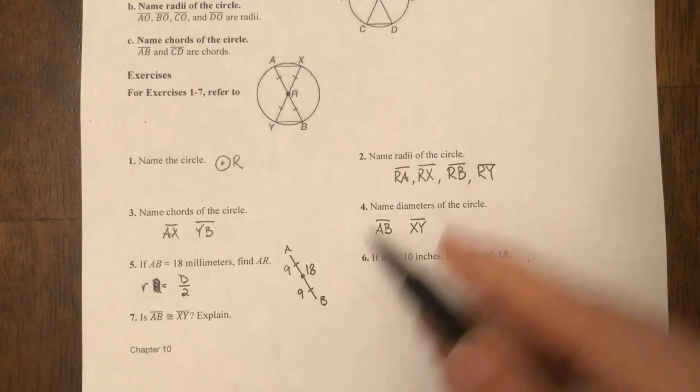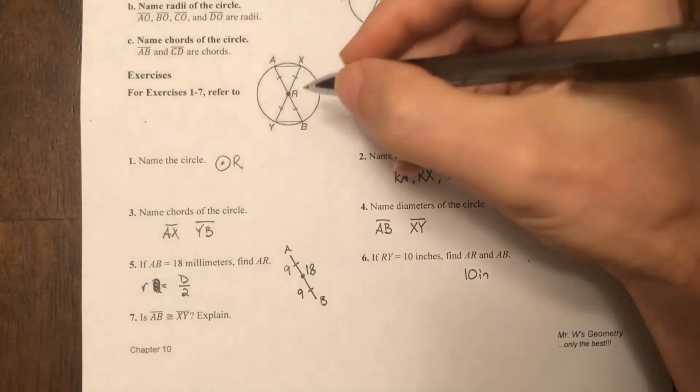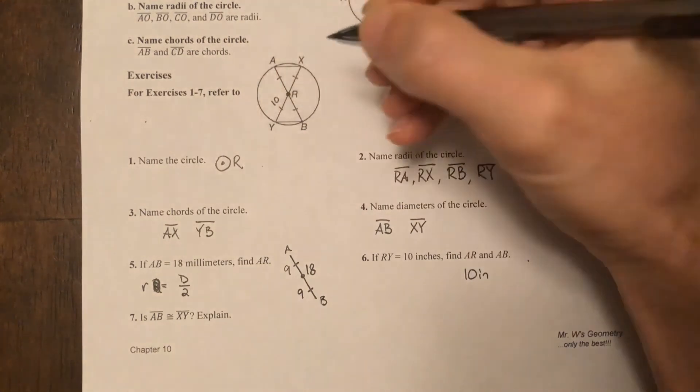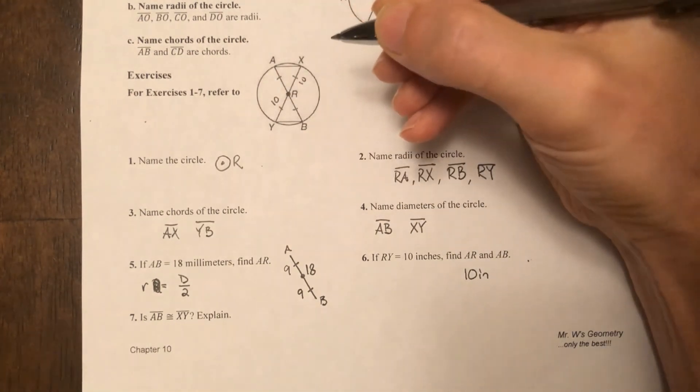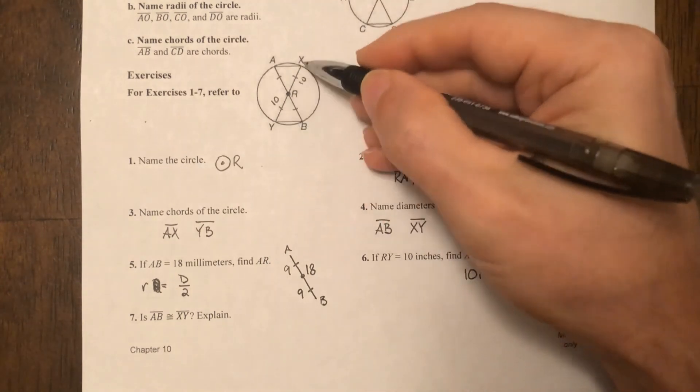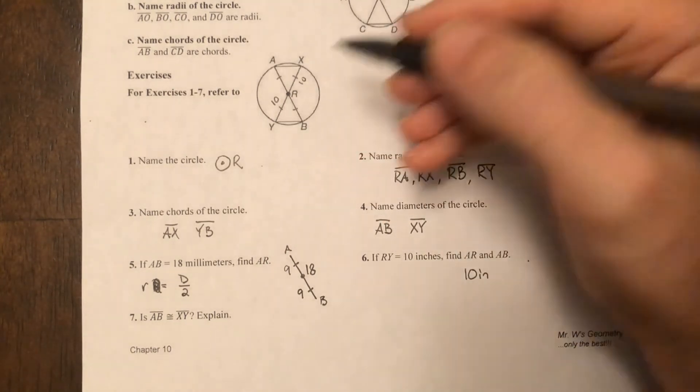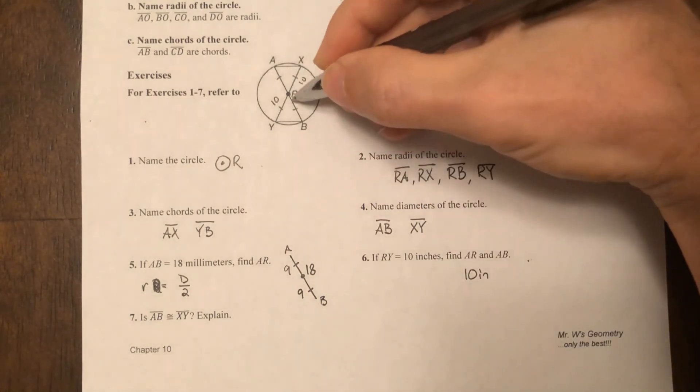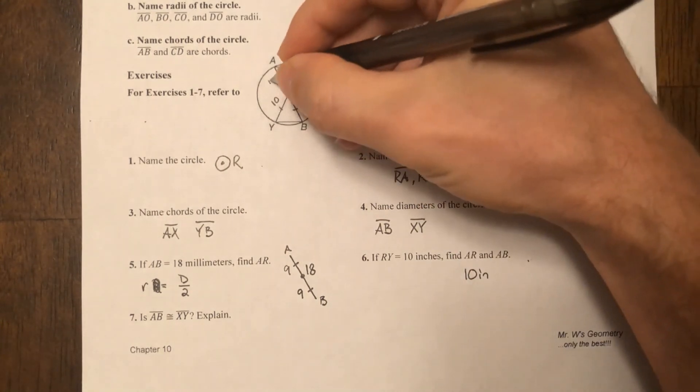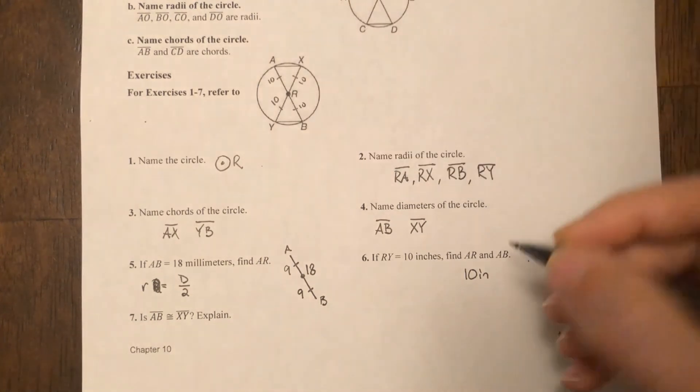Same thing here. If we know that RY is 10, well then that means RX also has to be 10. So that would make YX 20. Well, if YX is 20 and that's a diameter, AB is also a diameter, also has to be 20 because that's 10 and that's 10. Does that make sense?